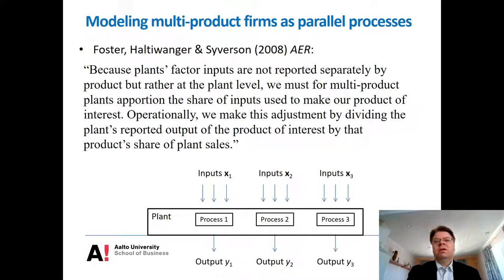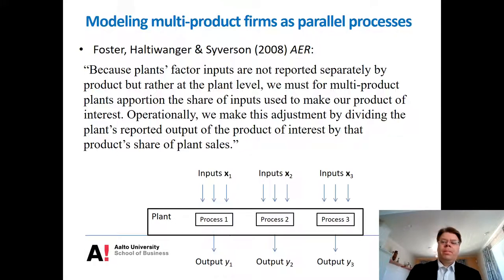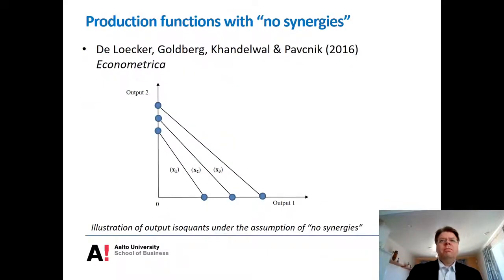Therefore, they make a rather arbitrary assumption that they apportion inputs to different outputs based on revenue shares, or shares of plant sales. This idea that inputs would be used based on revenue shares is completely arbitrary, and it's easy to show that profit maximizing does not necessarily require that inputs be used according to revenue shares. Perhaps the even bigger problem is that this idea of parallel processes — where you can just divide inputs among multiple outputs — completely ignores the possible synergies of joint production.